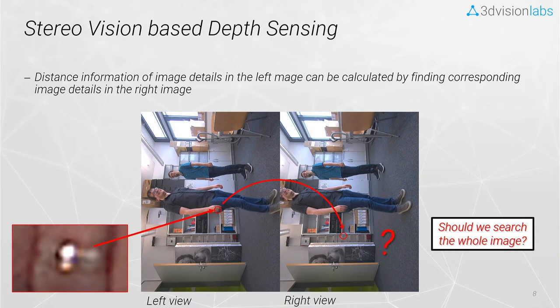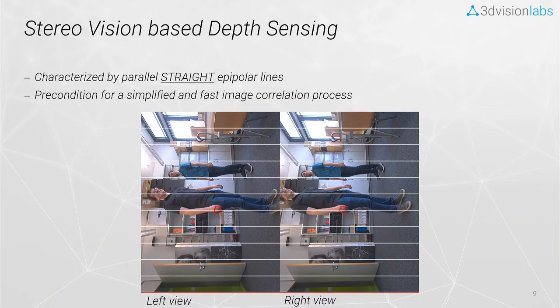Now let us try to find the corresponding feature in the right image. How should the algorithm do it — should it search the whole right image for this single feature? It could, but it would have to repeat this procedure for millions of pixels, which would take a very long time. We are lucky because our sample images are the results of so-called perspective projection and our images are perfectly aligned. As indicated here by white lines, our sample feature shown in the left image can be found on the same horizontal line — the same image row — in the right image. This reduces our search space from 2D to 1D and dramatically speeds up the stereo correspondence process. These lines are called epipolar lines, and they are quite crucial for generating real-time devices.